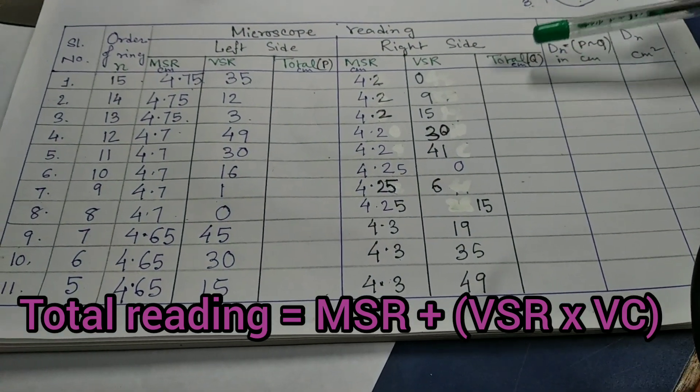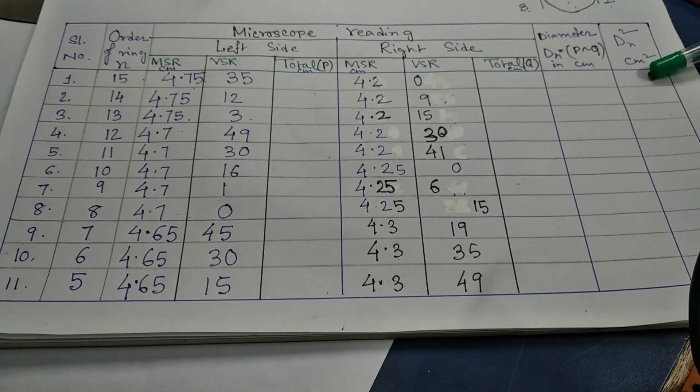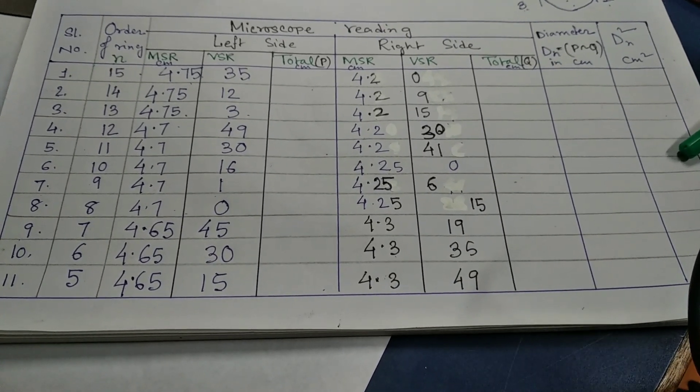Our diameter will be difference of both the total, both sides. Then, we have to calculate diameter square.